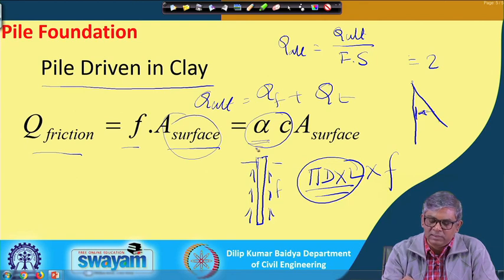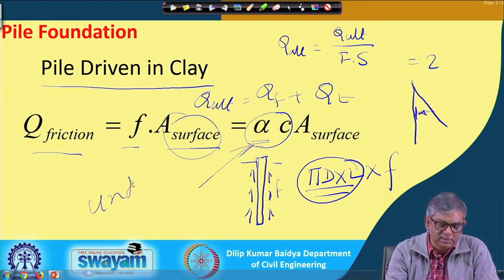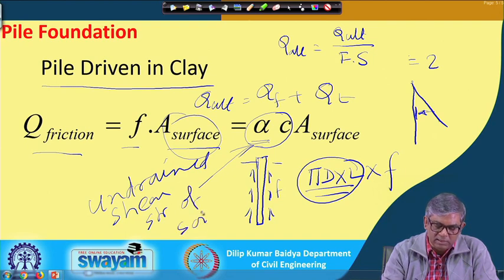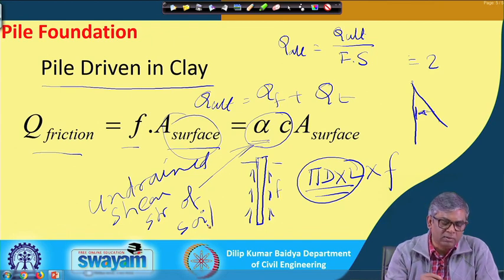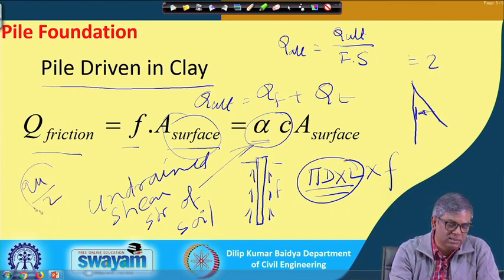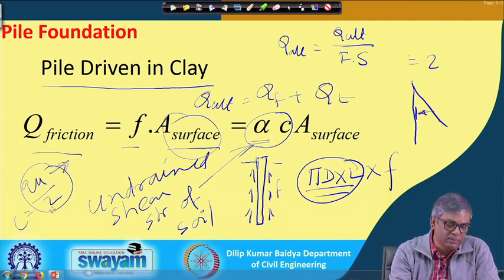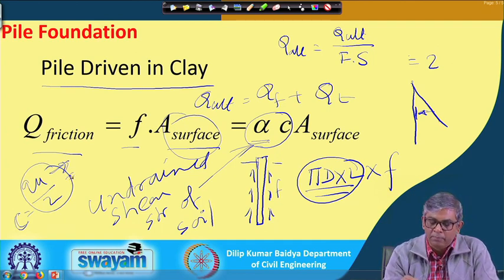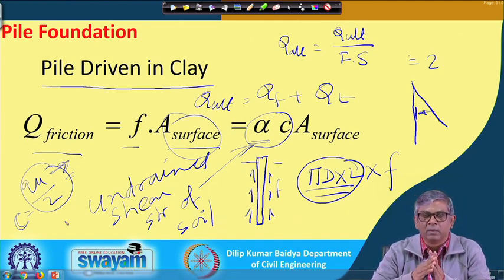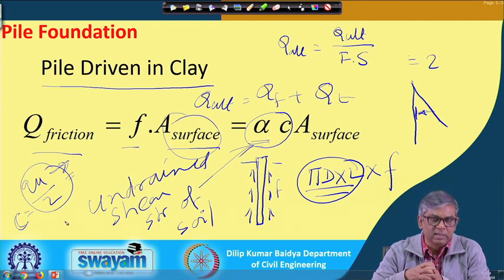The undrained shear strength c can be obtained from an unconfined compression test: c = qu/2, where qu is the unconfined compressive strength. The adhesion between soil and pile is c, but we modify it by a factor alpha (α), which is always less than or equal to 1. This reduction accounts for soil disturbance during pile driving - the adhesion between soil and pile may not be as good as before driving.